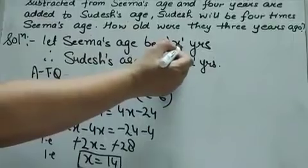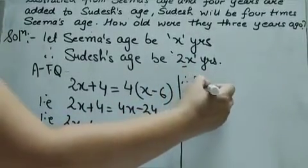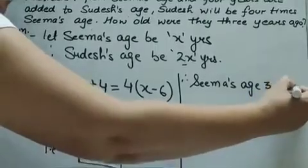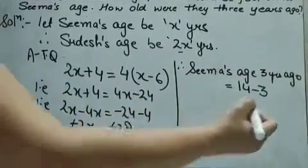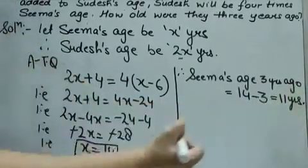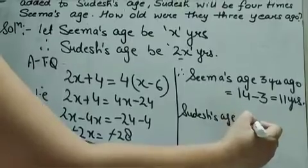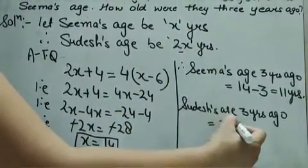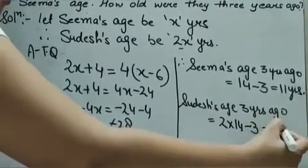X was supposed to be Sima's present age. So 3 years ago, Sima's age equals X minus 3, that is 14 minus 3, which is 11 years. And Sudesh's age 3 years ago equals 2 into X minus 3, that is 2 into 14 minus 3, which is 28 minus 3, that is 25 years.